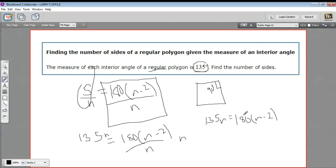And then let's go ahead and distribute this 180. So over here, I've still got 135n. And here I've got 180n minus 360.